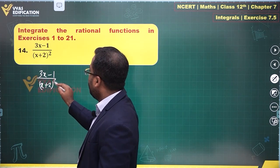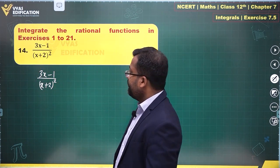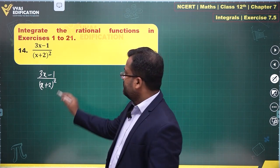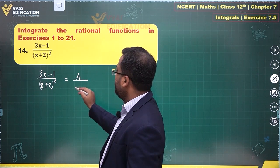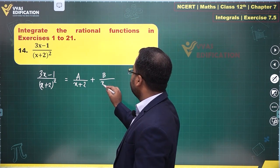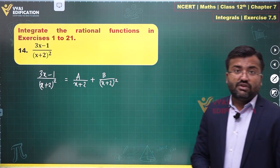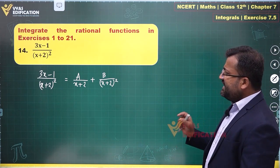And what will be the partial fractions? A upon x plus 2 is one of the terms, plus B upon x plus 2 square is what we'll get. That is the partial fraction that we'll get.